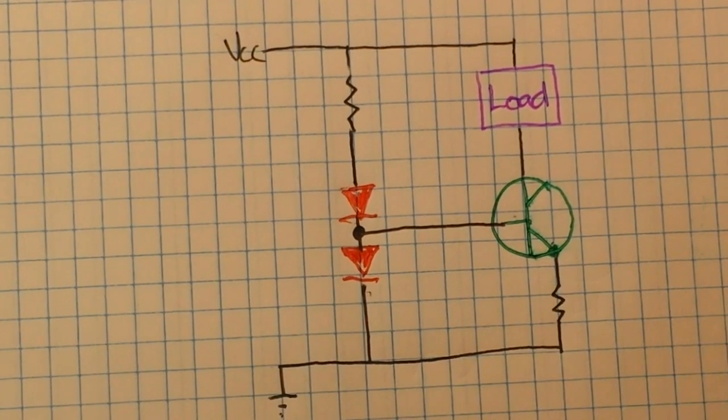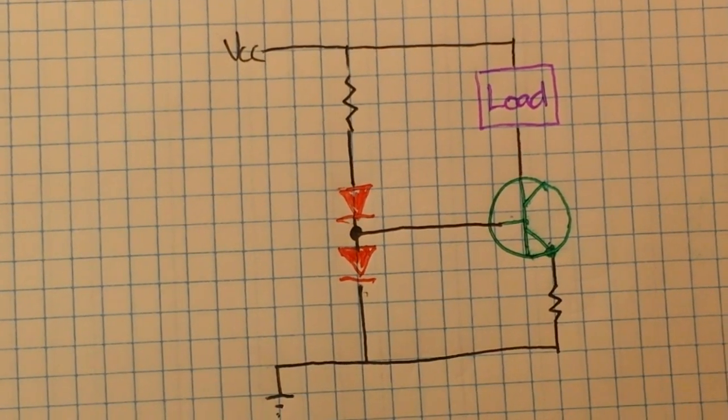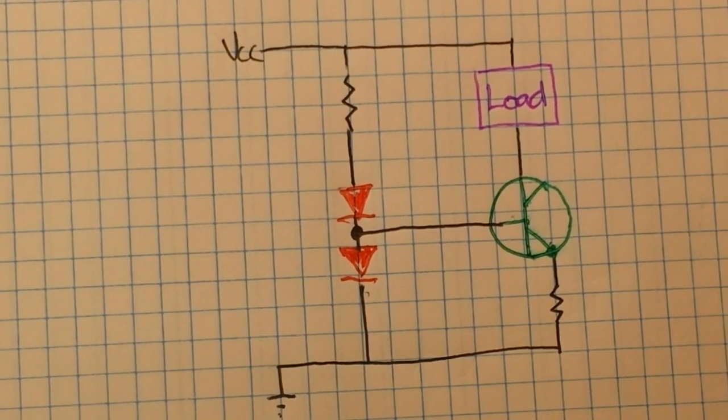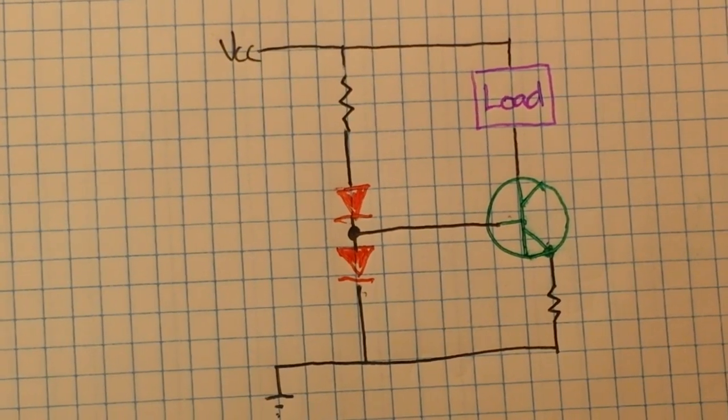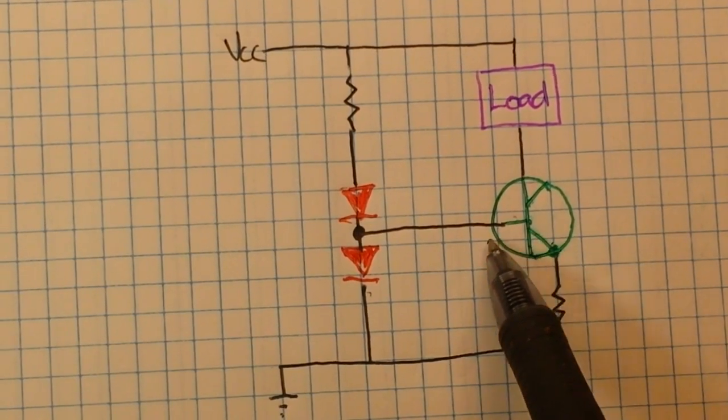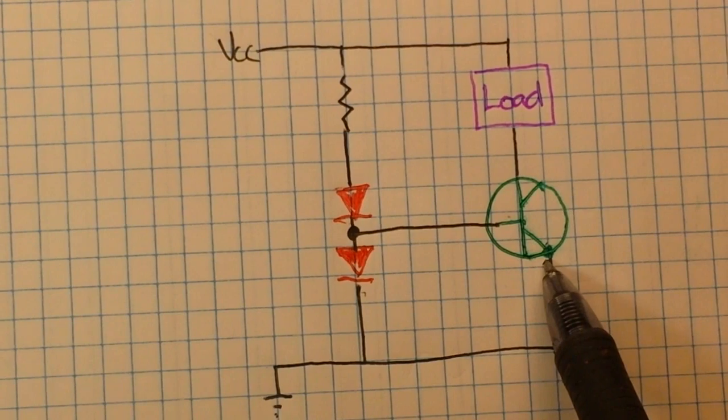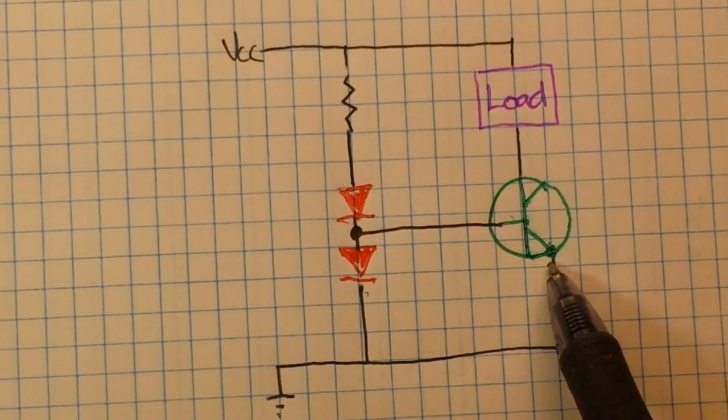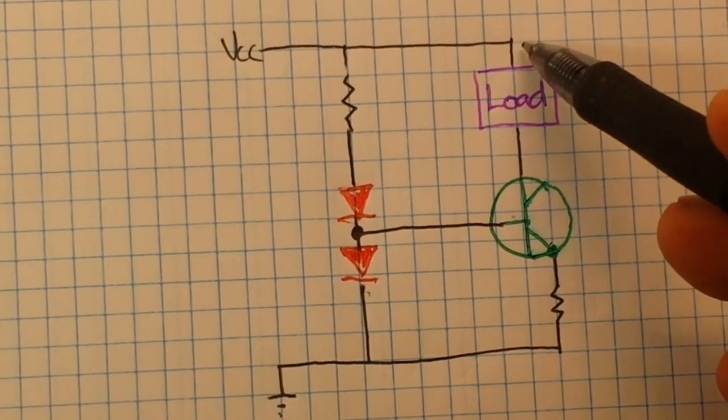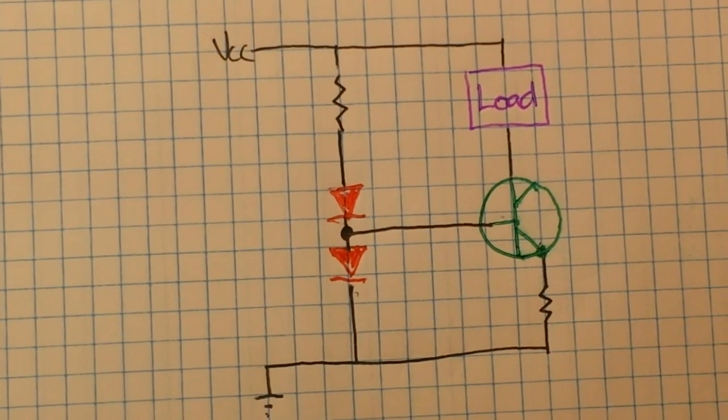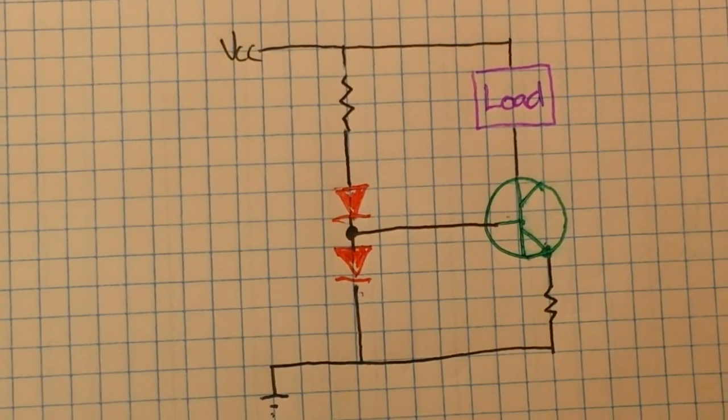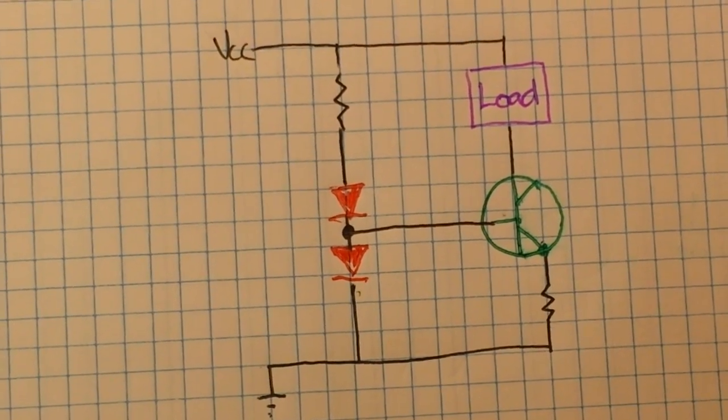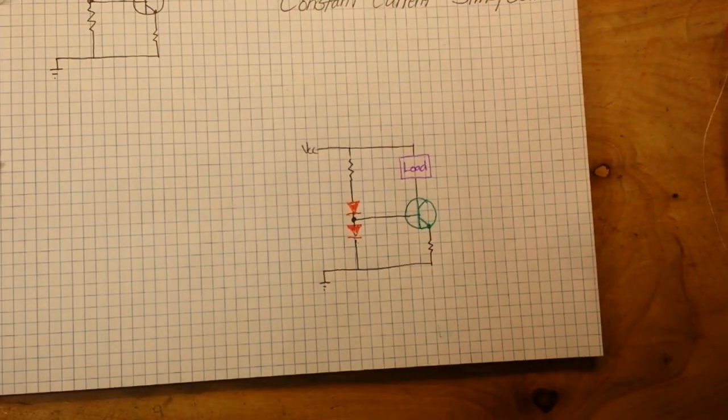Because the base-emitter junction we have controlled, it's locked now. Then the collector-emitter junction, which is an amplification factor... oh, here comes the trains. That must be a heavy one, it's got stuff shaking off my walls. Okay, so because we have a control of the base-emitter junction and we know that it has not changed, then the current emitter junction also cannot change. Are you with me so far?